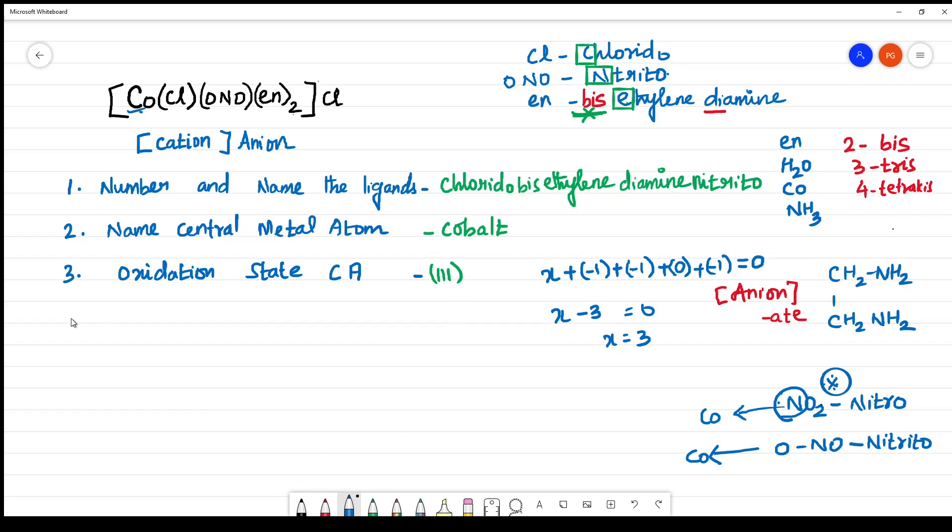The last one is, what is finally present here? Anion. Name the anion. What is the name of the anion? The name of the anion is chloride. Here you should not use mono dichloride. You have to name it normally.